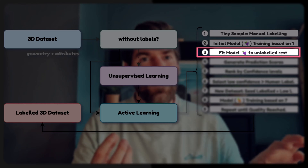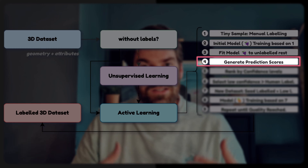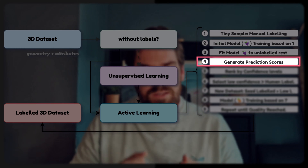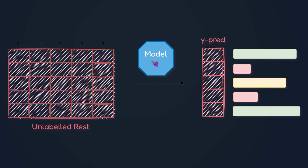In the third stage, we take the model and apply it to the remaining unlabeled data points. In the fourth step, this generates prediction scores — probabilities for each of our classes. This requires a probabilistic model, which gives you confidence intervals. For example, the model might say it's 76% confident this cluster is a chair, or only 5% confident it's a chair.